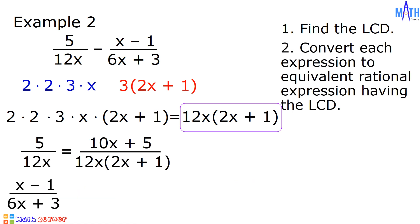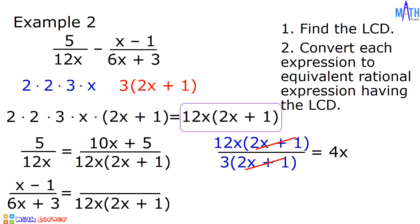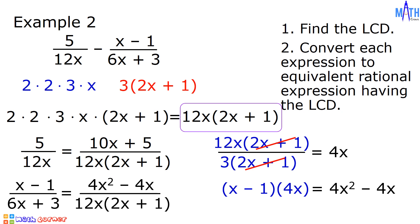Next, let us convert x minus 1 over 6x plus 3 to an equivalent rational expression having the LCD. Divide 12x times quantity 2x plus 1 by 6x plus 3. Since 6x plus 3 is equal to 3 times quantity 2x plus 1, the 2x plus 1 terms cancel, and 12x divided by 3 is equal to 4x. Let us multiply 4x by the numerator x minus 1: x minus 1 times 4x is equal to 4x squared minus 4x. And the numerator is 4x squared minus 4x.